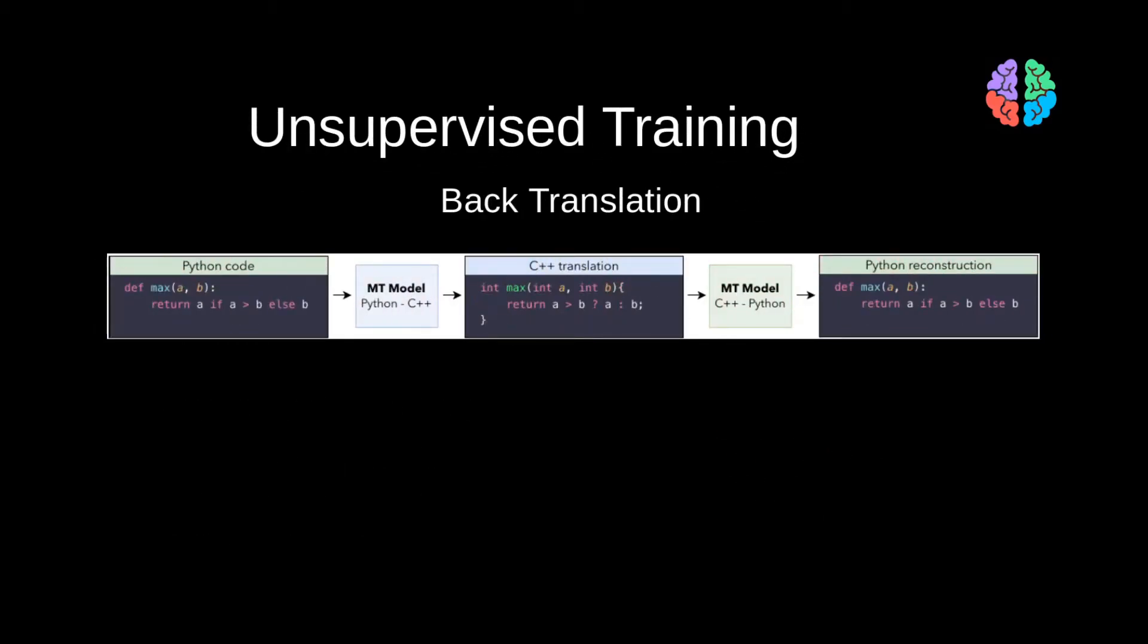The third and last stage is back translation. So far, the model has always seen the same language in the output and the input. To strengthen its ability to translate, we follow a classic component of unsupervised machine translation, which is back translation.